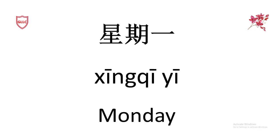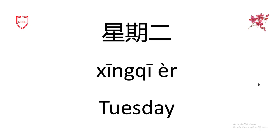So here's how to say Monday in Chinese. It's very simple — Xing Qi means 'week' and Yi means 'one,' so Xing Qi Yi means Monday, literally 'week one' or the first day of the week. For Tuesday, it's the second day, and two in Chinese is Er, so Tuesday is Xing Qi Er.